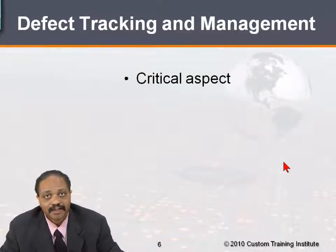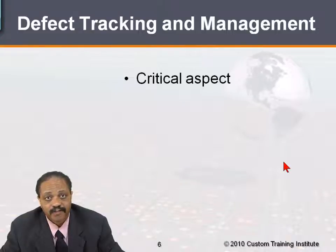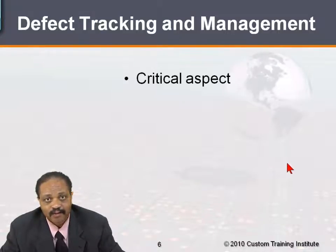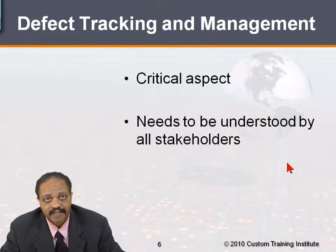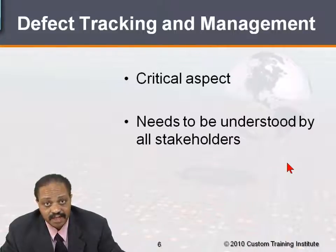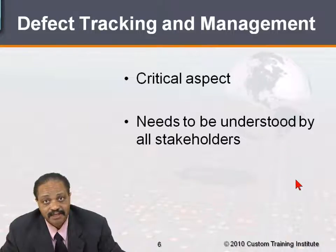Software defect tracking is a critical aspect of software quality because, while we endeavor to design our software to be as high quality as possible, software is designed and built by humans, which means that there's going to be something that slips through. It's critical that we keep track of any reported problems that occur. Defect tracking and defect management needs to be understood by everyone that has a stake in the success of the software — management, developers, designers, architects, and end users — and everybody has to understand that it's important to promptly report any problems that may occur.